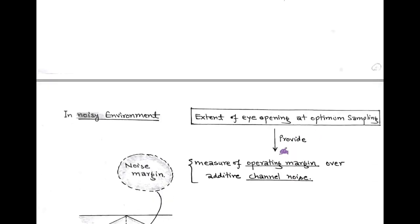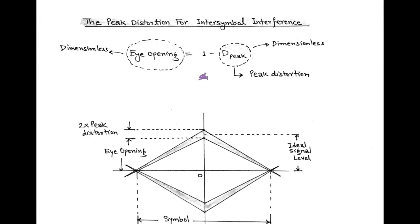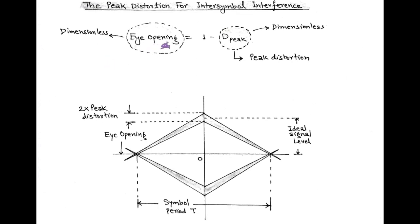Next, consider a noisy channel. In this situation, we consider the noise margin, indicated by the height of eye opening. The extent of eye opening at the optimum sampling rate provides a measure of operating margin over additive channel noise — that is, margin over noise. The extent of eye opening can be determined in terms of peak distortion for inter-symbol interference, and its formula is: Eye Opening = 1 − Peak Distortion. The relationship between peak distortion D and eye opening is shown in the figure.